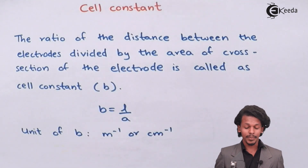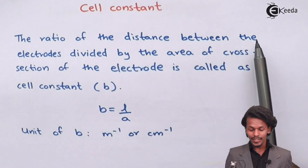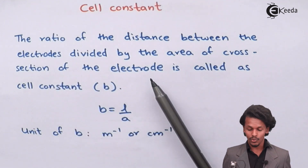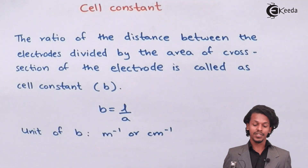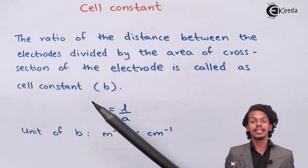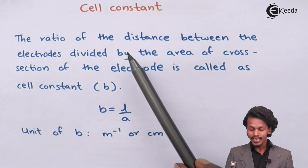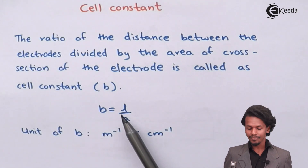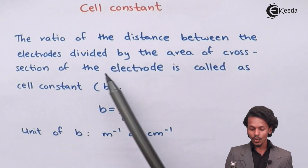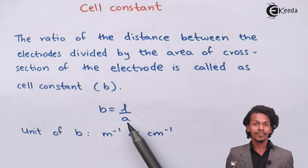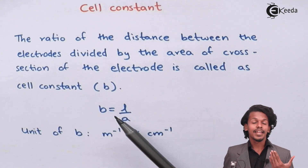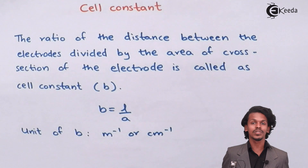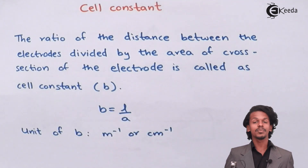The cell constant is nothing but the ratio of the distance between the electrodes divided by the area of cross section of the electrode, and it is denoted by the symbol B. So it is the length L between the two electrodes divided by the area of cross section A of the electrodes.